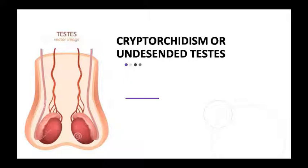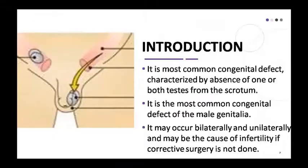Cryptorchidism is a condition in which the testicle is arrested at some point in its descent. It is a congenital disorder in which one or both testes fail to descend into the scrotum, remaining in the abdomen or inguinal canal. This is a common congenital defect of male genitalia.